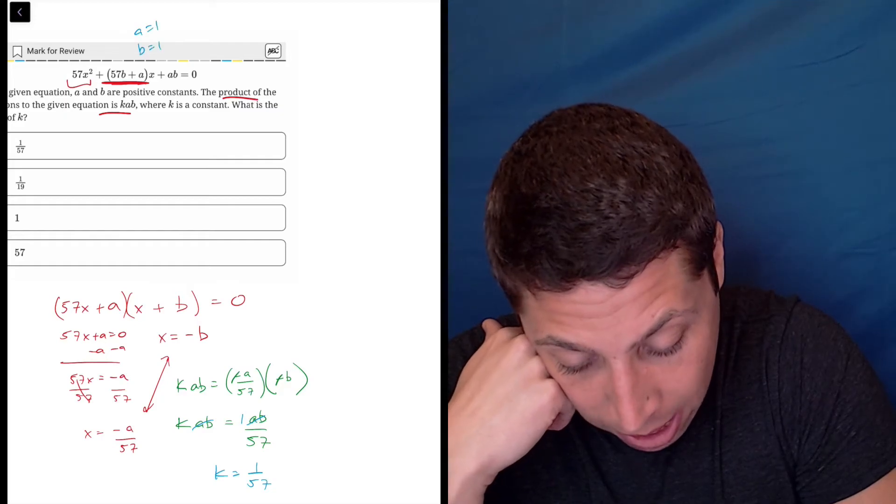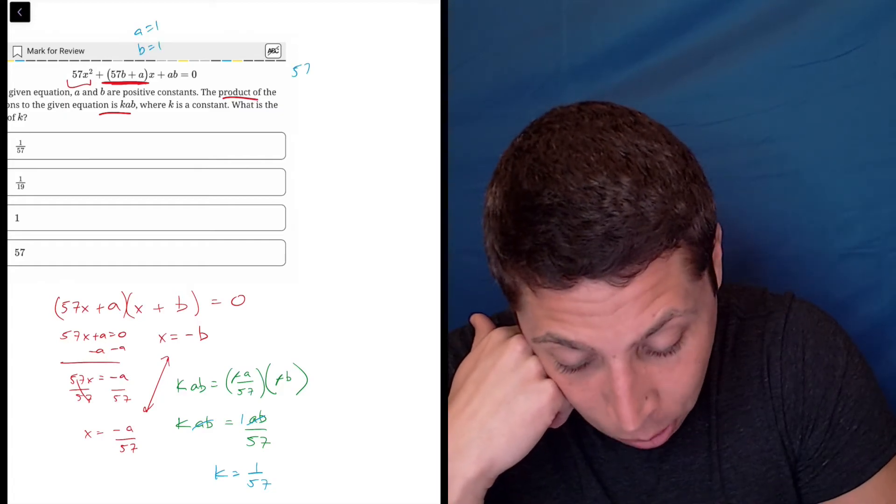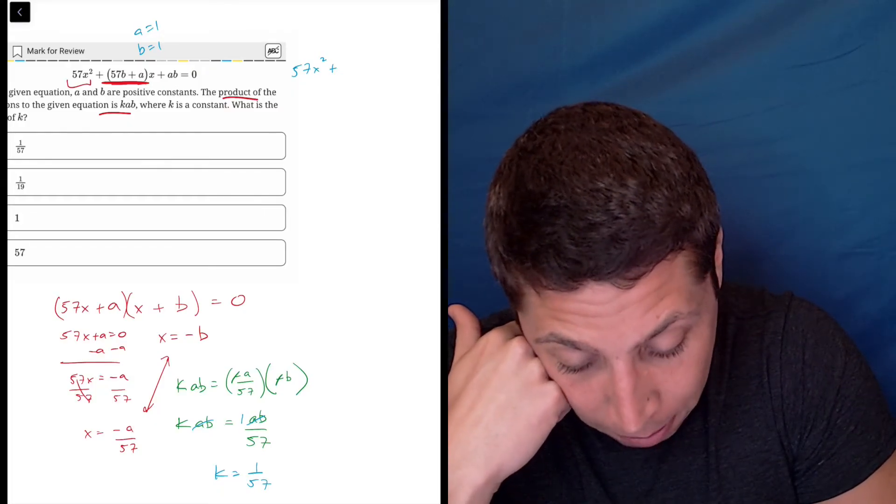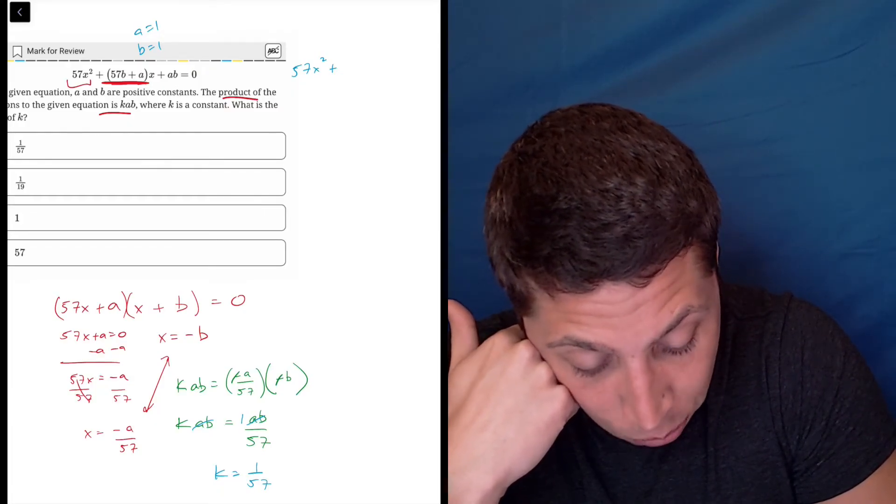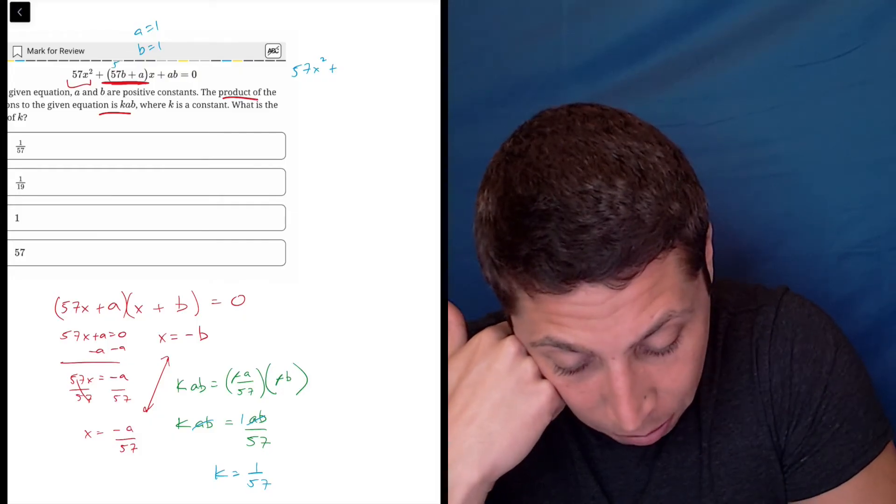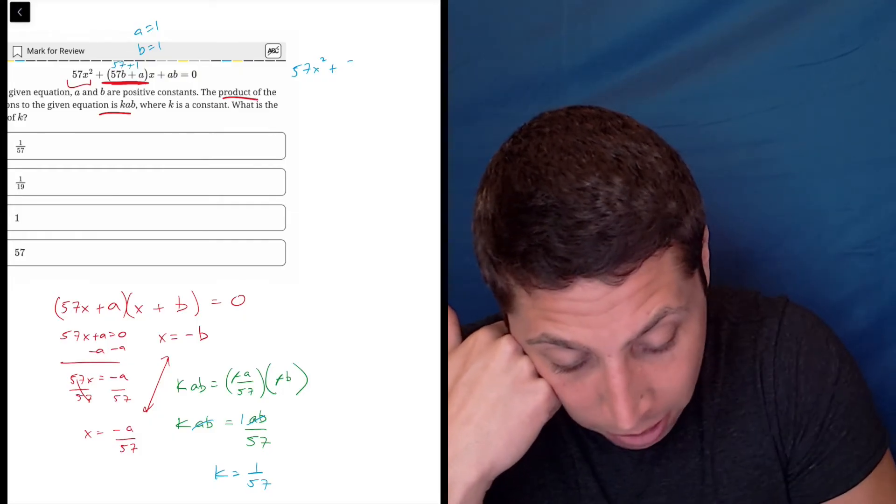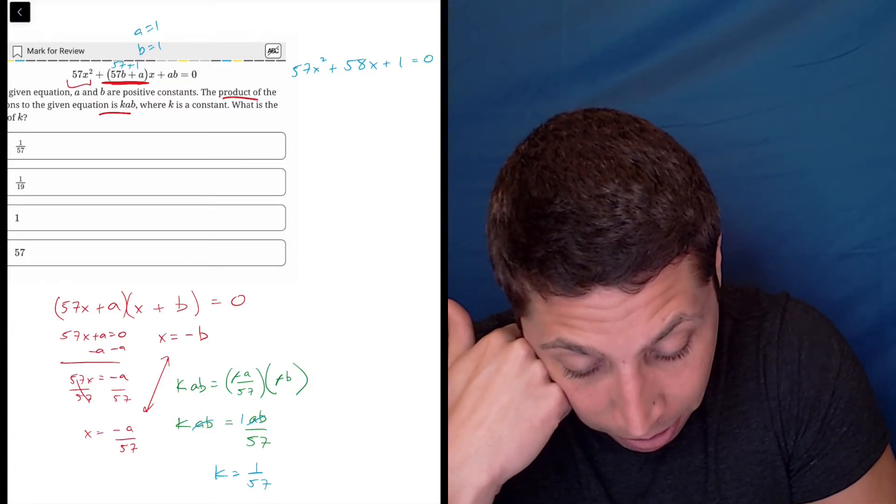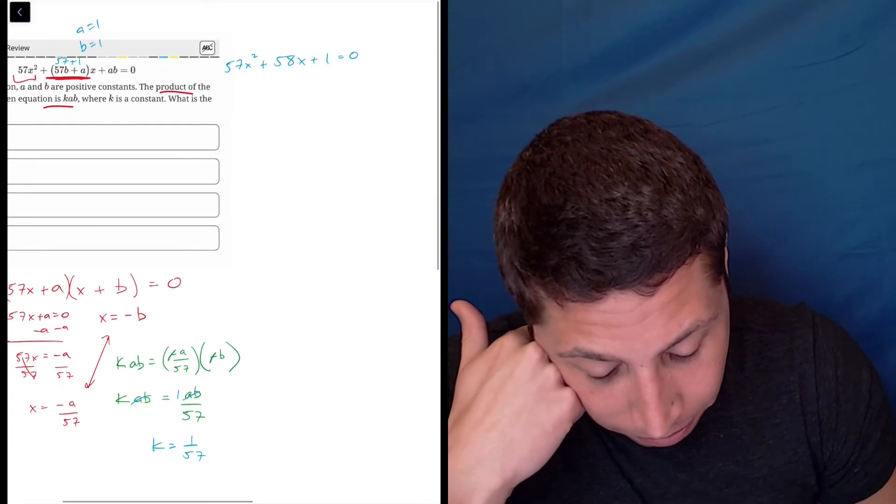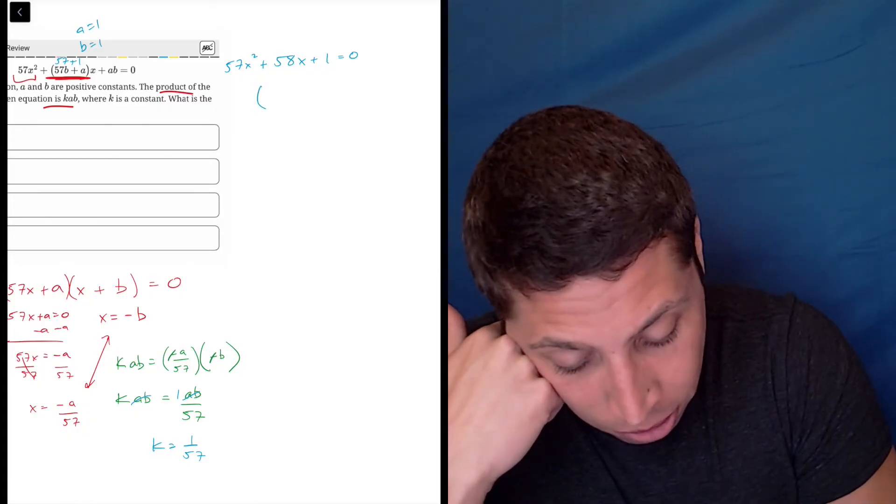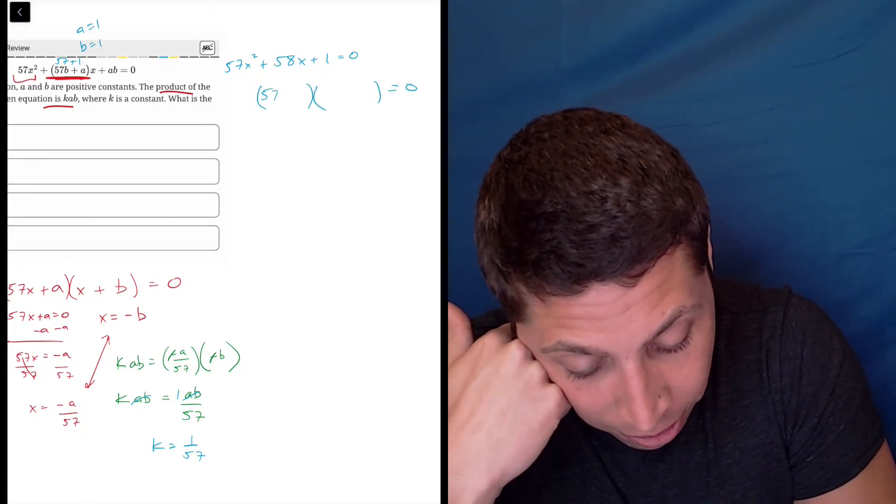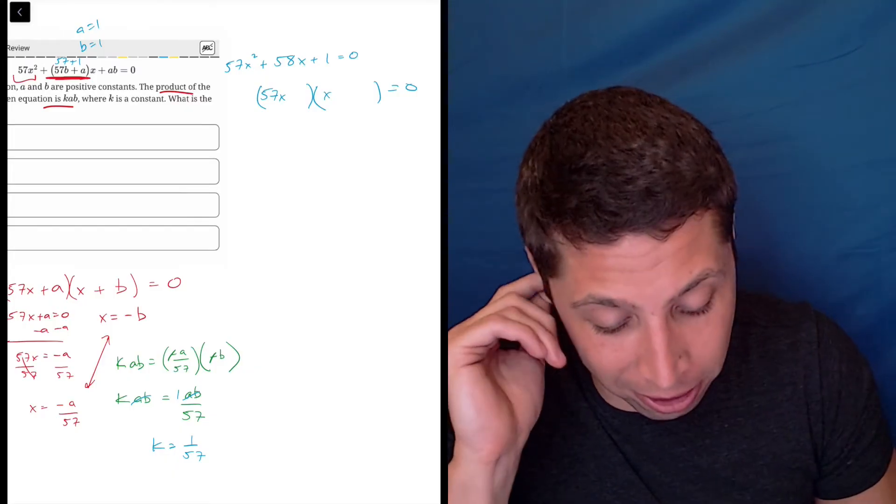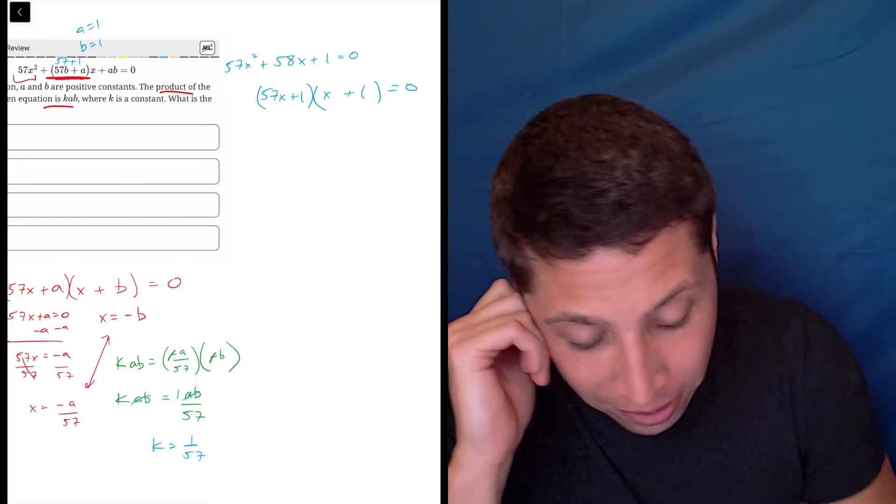Let's say a is one and b is one. Then this equation would be 57x squared plus 57, b would be 57 times one. So that's 57, this would be 57 plus one, so it'd be 58x plus one is equal to zero, right? A times b. So then you could factor that. You get 57x and x and then this would be more like trial and error, but it kind of has to work out that it's one and one, right?